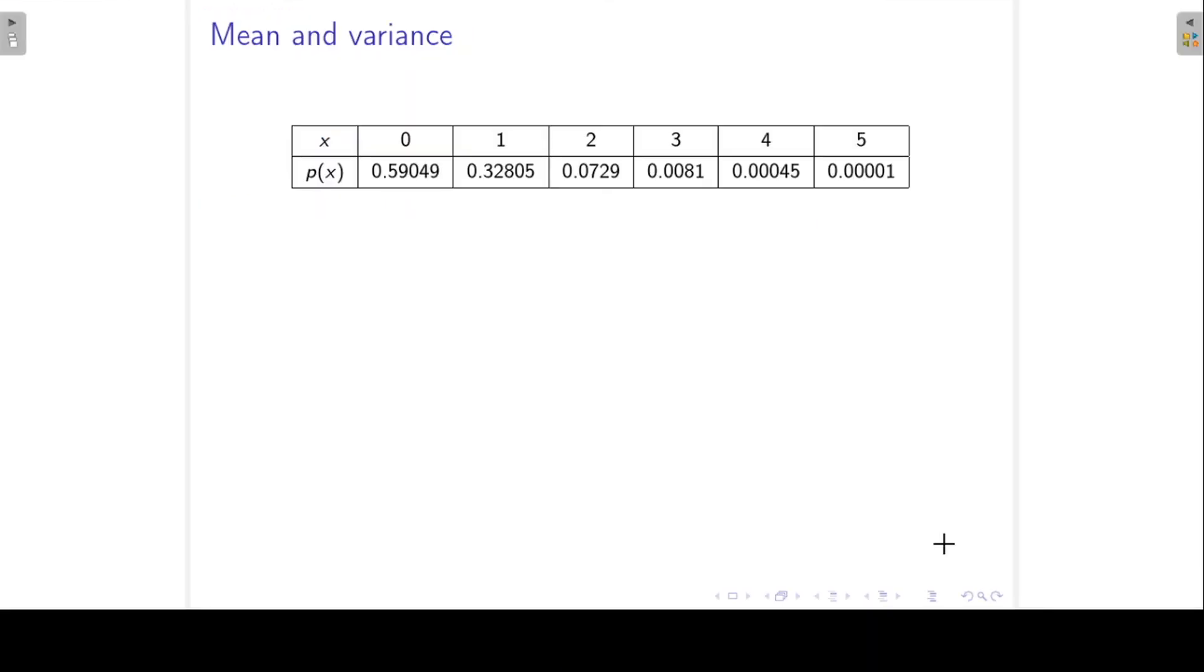We would also like to find the mean and the variance of a binomial random variable. So if we go back to our example, where x follows the binomial distribution with n=5 and p=0.1. To find the expected value of x, we use the general formula for discrete random variables, and that's the sum of x times p(x).